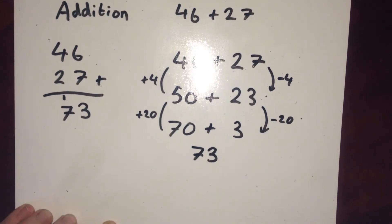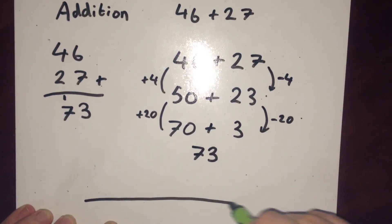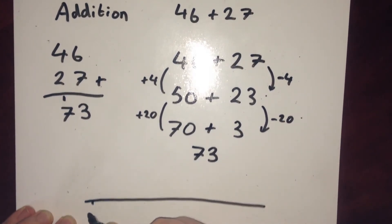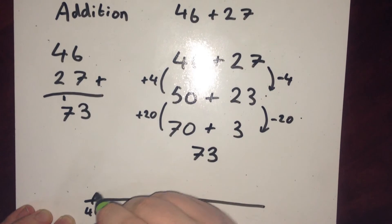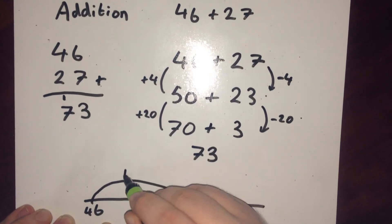You could also do this question on a number line. If I draw a line, I'm starting at 46 and I need to go up by 27. So I could take jumps. I'm going to take a big jump to start with of 20.